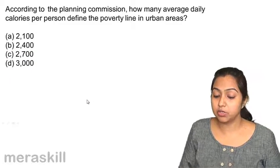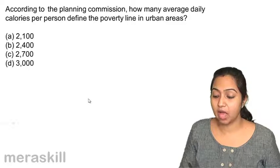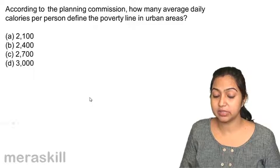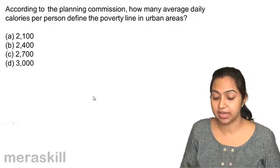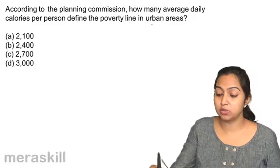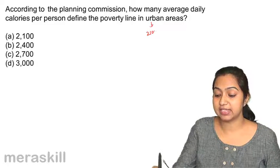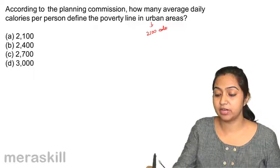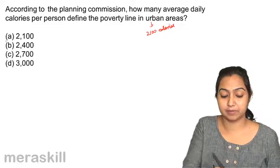According to the Planning Commission, how many average daily calories per person define the poverty line in urban areas? In urban areas it is 2100 calories per day.